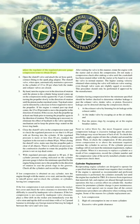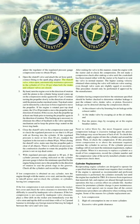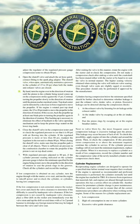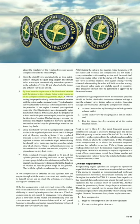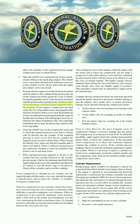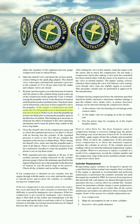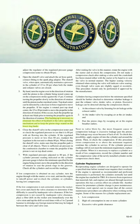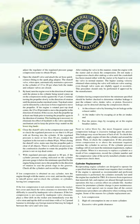Turn the engine over in the direction of rotation until the piston in the cylinder being tested comes up on the compression stroke against the 15 psi, then continue slowly until the piston reaches top dead center — detectable by a decrease in force required to move the propeller. If rotated past top dead center, the 15–20 psi tends to move the propeller in the direction of rotation; if this occurs, back the propeller up at least one blade prior to turning again. This backing up eliminates backlash in the valve operating mechanism and keeps the piston ring seated on the lower ring lands.